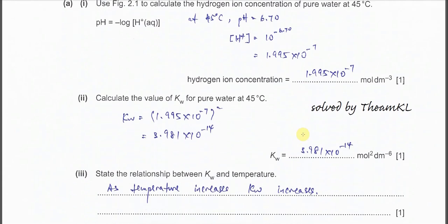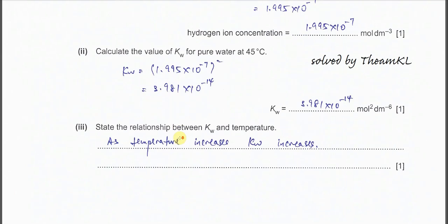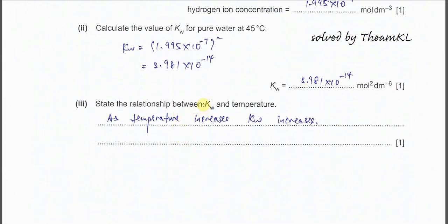Calculate the value of Kw for pure water at 45 degrees C. Because we know that the concentration of hydrogen ion equals the concentration of hydroxide for pure water, we just use the concentration squared. We get 3.981×10⁻¹⁴. This is the Kw value at 45 degrees C, which is much larger than the Kw at 25 degrees C, which is 1×10⁻¹⁴. As temperature increases, Kw also increases.